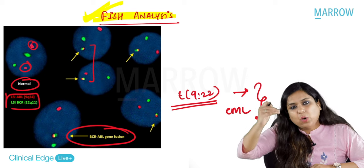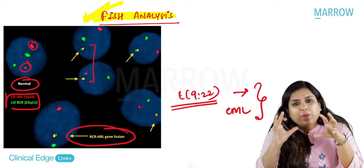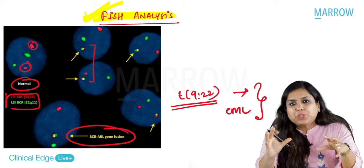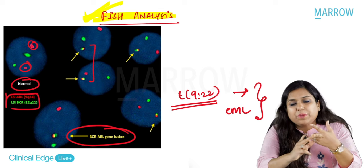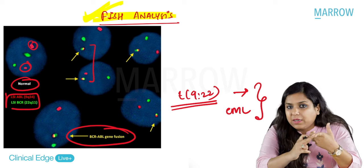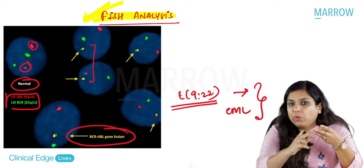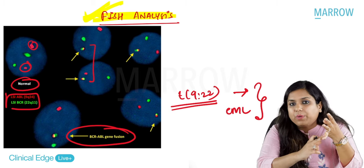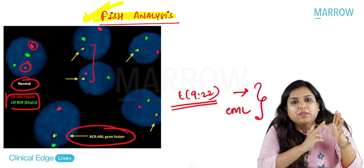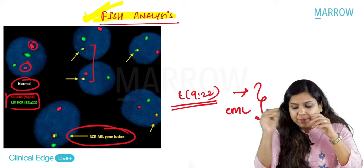How will you approach such a case? See the history of the patient, do the peripheral smear and lab profile, do a NAP score, do a bone marrow aspirate, and then do a FISH analysis.